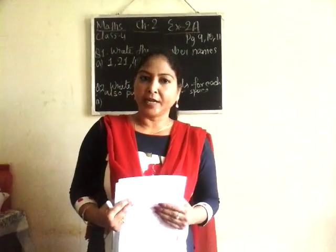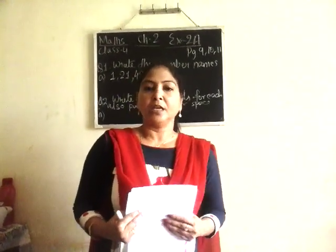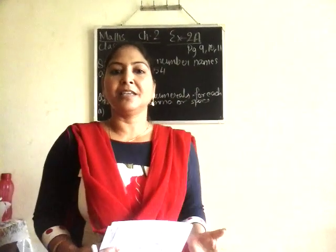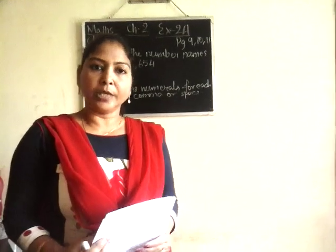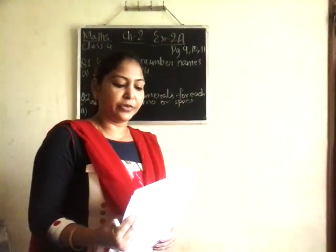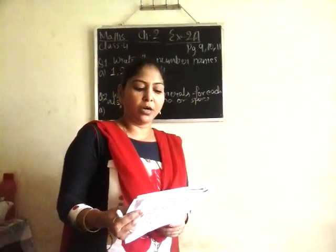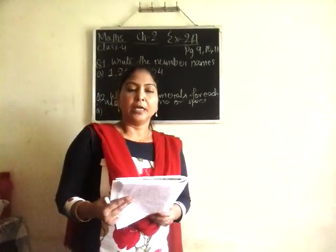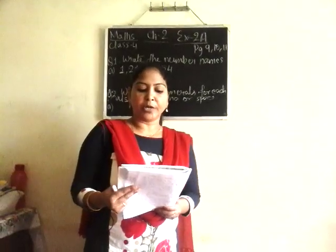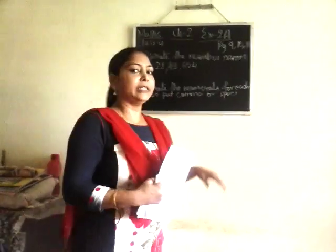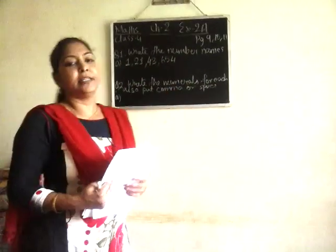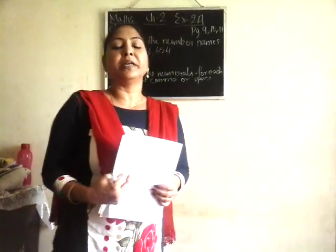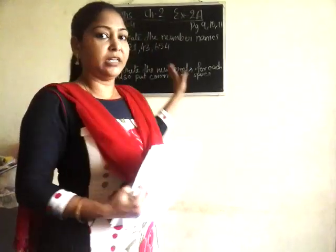So if you can take out your book, that will be good, because if you go through the questions it will be easier for you to understand. So let us start. We will do exercise 2A, question number 1. The question is: write the number names for each of the following. As you can see, I have already written the question on the board. What you have to do is write the number names for this number.